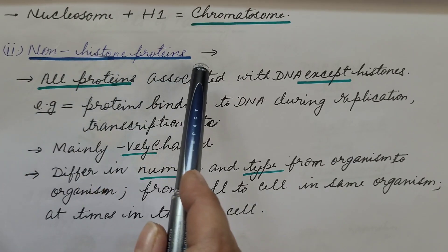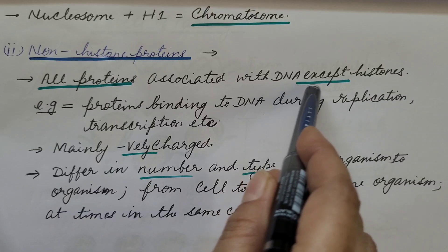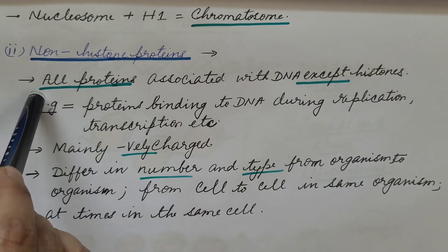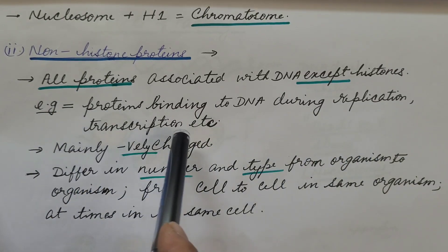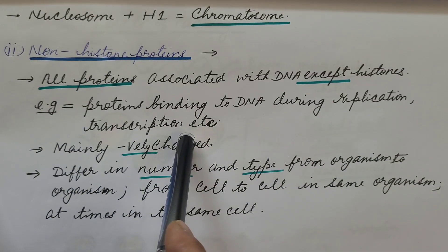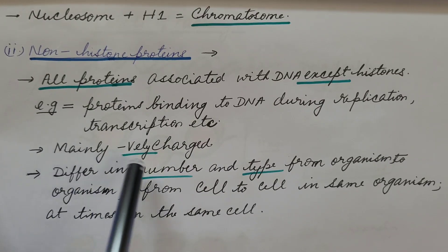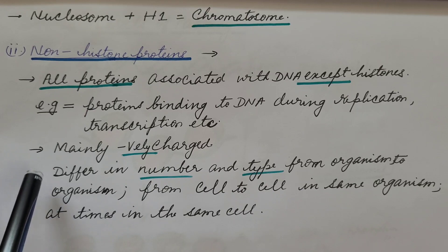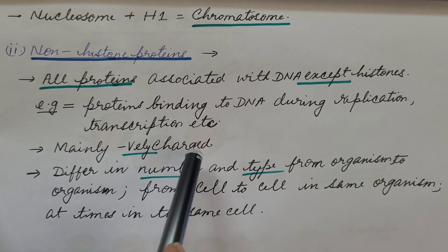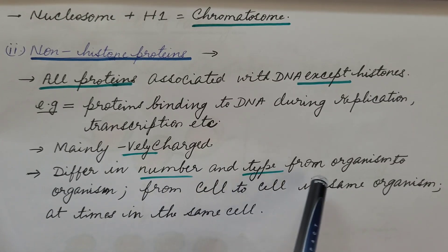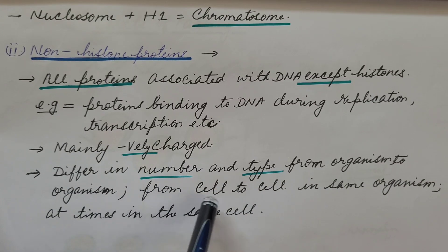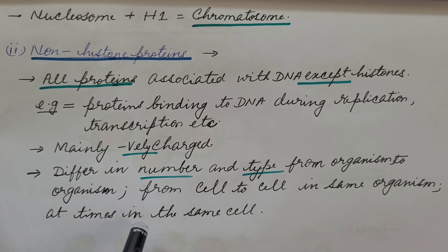The second type is non-histone proteins. All proteins associated with DNA except histones are non-histone proteins — for example, proteins binding to DNA during replication, transcription, recombination, repair, etc. These are mainly negatively charged and hence bind to positively charged histone proteins. They differ in number and type from organism to organism, from cell to cell in the same organism, and sometimes differ within the same cell.